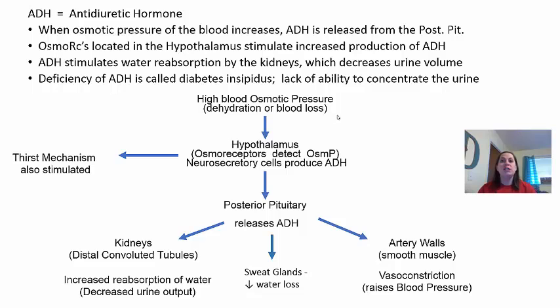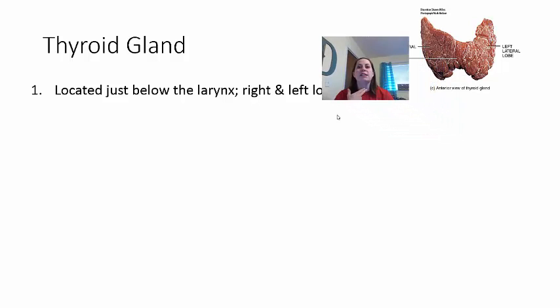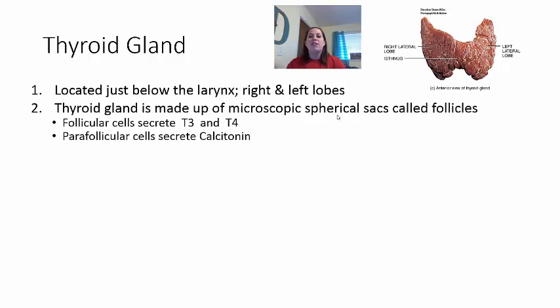The thyroid gland is located just below the larynx — the voice box — and has right and left sides, giving it a butterfly shape. Microscopically, it has sac-like areas called follicles. The follicular cells release T3 and T4 — the thyroid hormones. Outside the follicles are parafollicular cells, which release a third hormone called calcitonin. So the thyroid releases three hormones total.